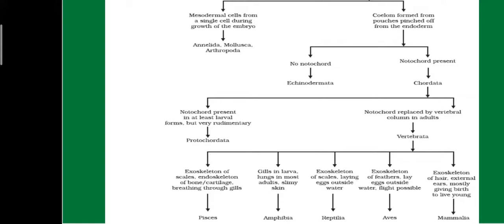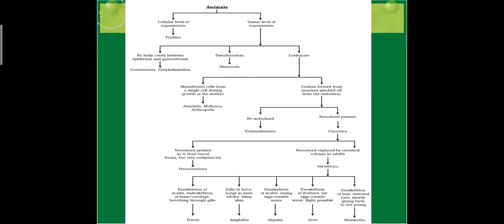Class Amphibia: gills in larva stage, lungs developed in adult stage. Class Reptilia: exoskeleton of scales, laying eggs outside the water. Class Aves: warm-blooded, exoskeleton of feathers, laying eggs outside water, ability to fly. Class Mammalia: exoskeleton of hair, external ear pinna present, mostly giving birth to young ones, warm-blooded. This was the tabular classification of kingdom Animalia.